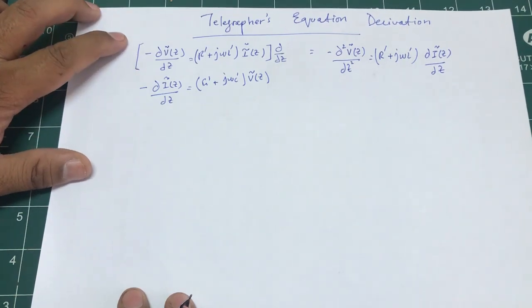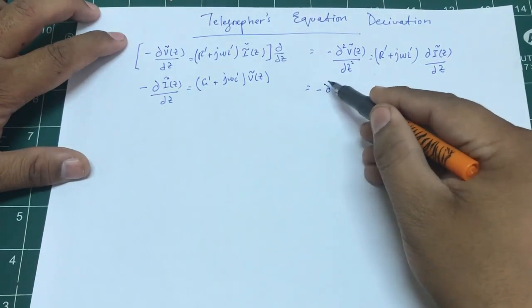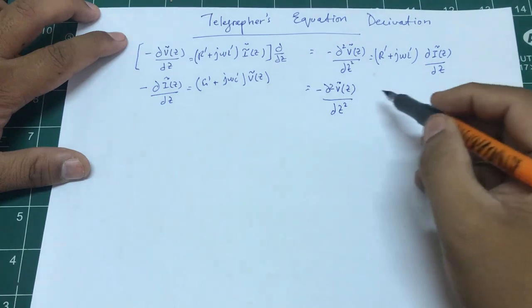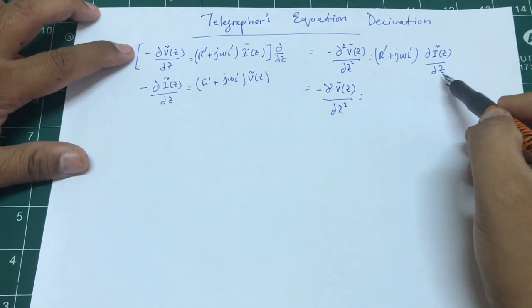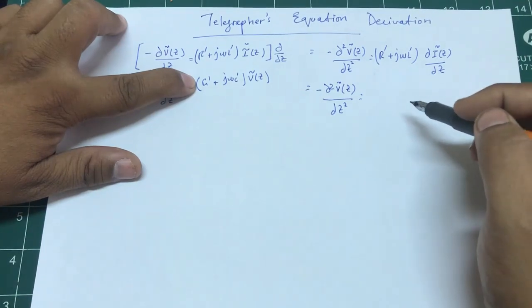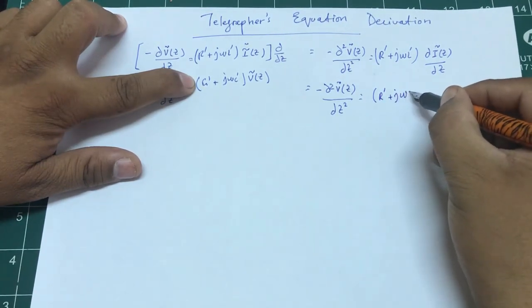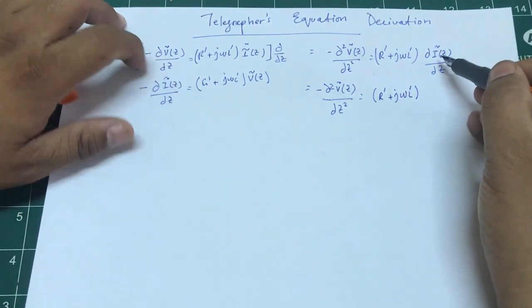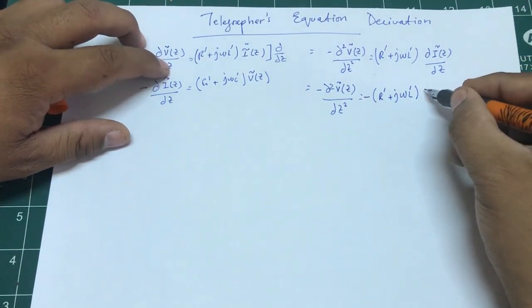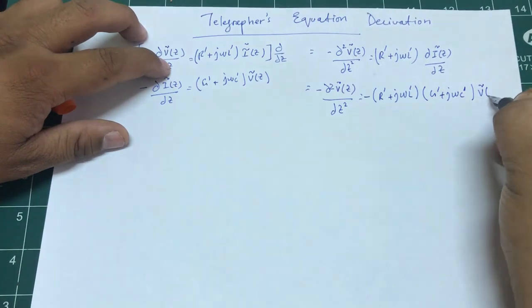Now I'm going to make a few replacements. This becomes d²V of z over dz². I know that dI of z over dz equals G prime plus j omega C prime times V of z. So replacing that: R's prime plus j omega L prime times the quantity G prime plus j omega C prime, with a negative sign, times V of z.